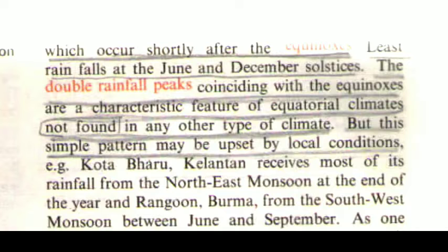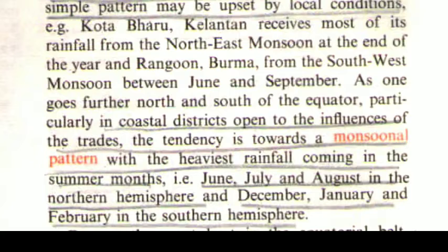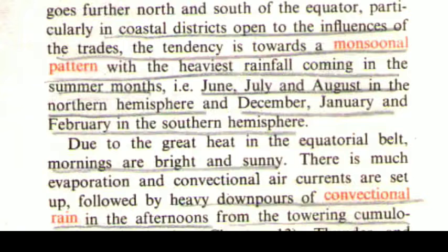The double rainfall peaks coinciding with the equinoxes are a characteristic feature of equatorial climates not found in any other type of climate. But this simple pattern may be upset by local conditions — for example, Kota Bharu, Kelantan, receives most of its rainfall from the northeast monsoon at the end of the year, and Rangoon, Burma, from the southwest monsoon between June and September. As one goes further north and south of the equator, particularly in coastal districts open to the trades, the tendency is towards a monsoonal pattern with the heaviest rainfall in the summer months.